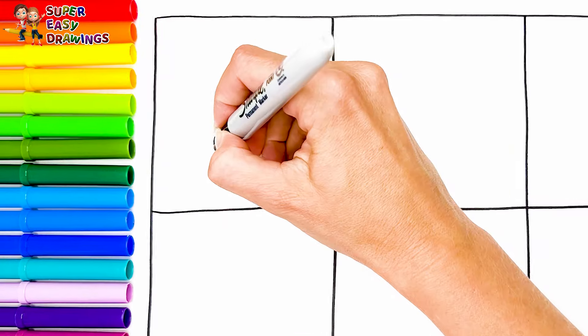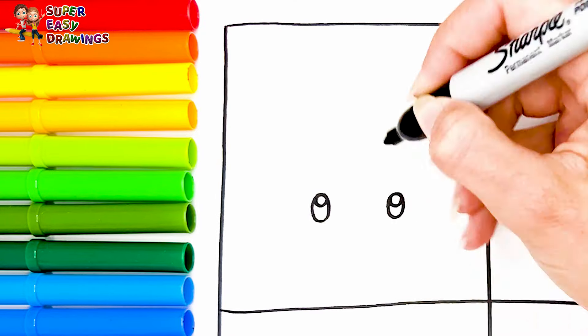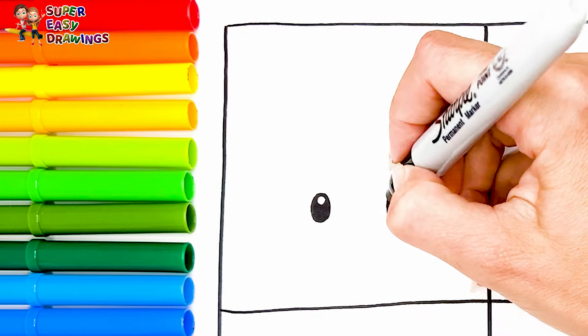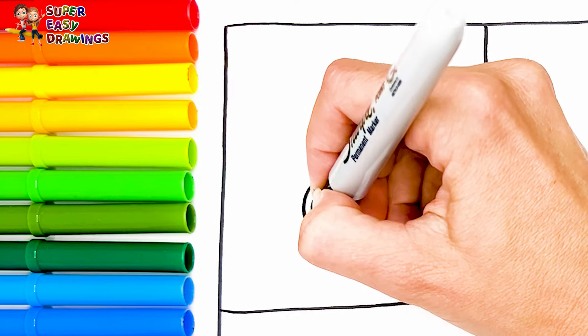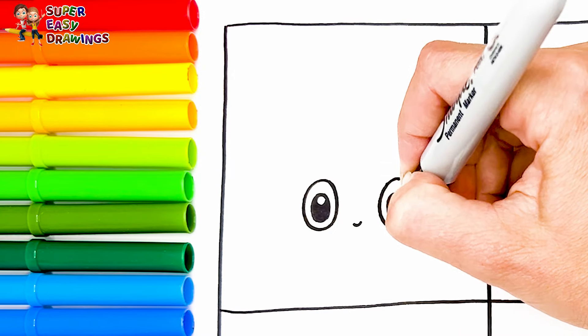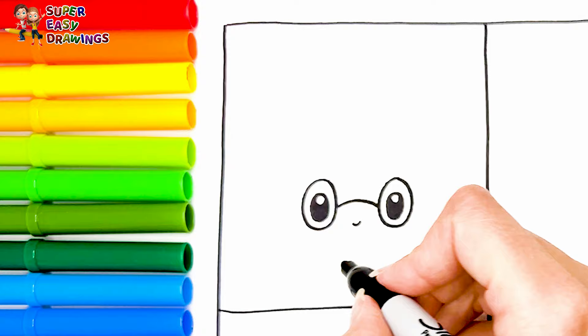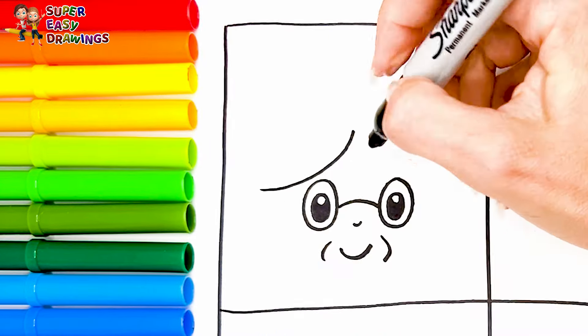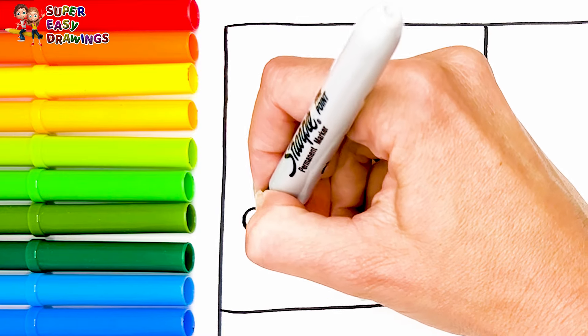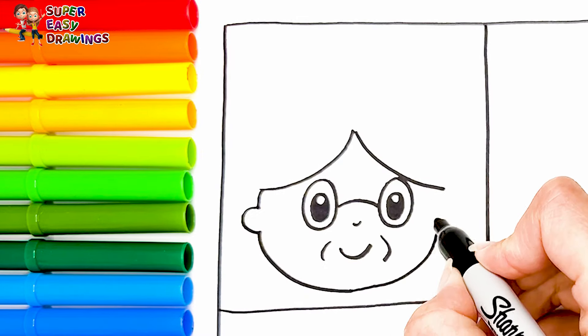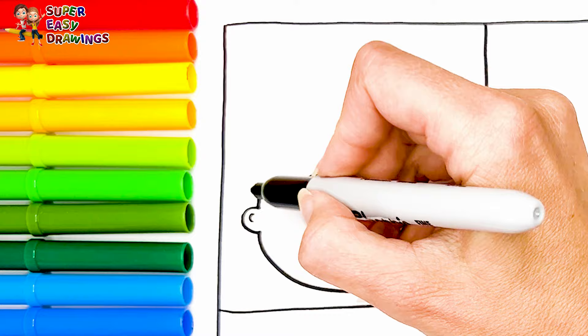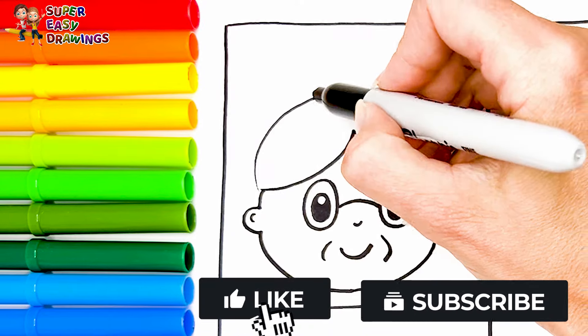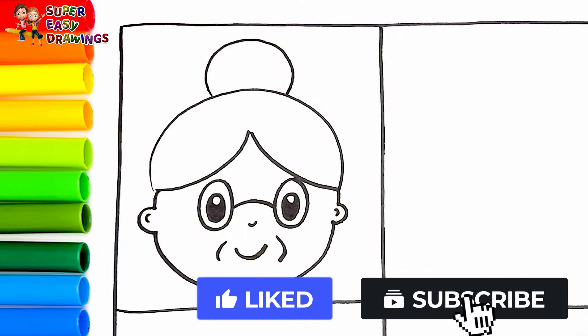I start with the grandmother. I draw her eyes, then I draw her nose, her glasses, her smiling mouth and some wrinkles, her ears and her face. Then I continue with her hair. I finish her hair with a bun.